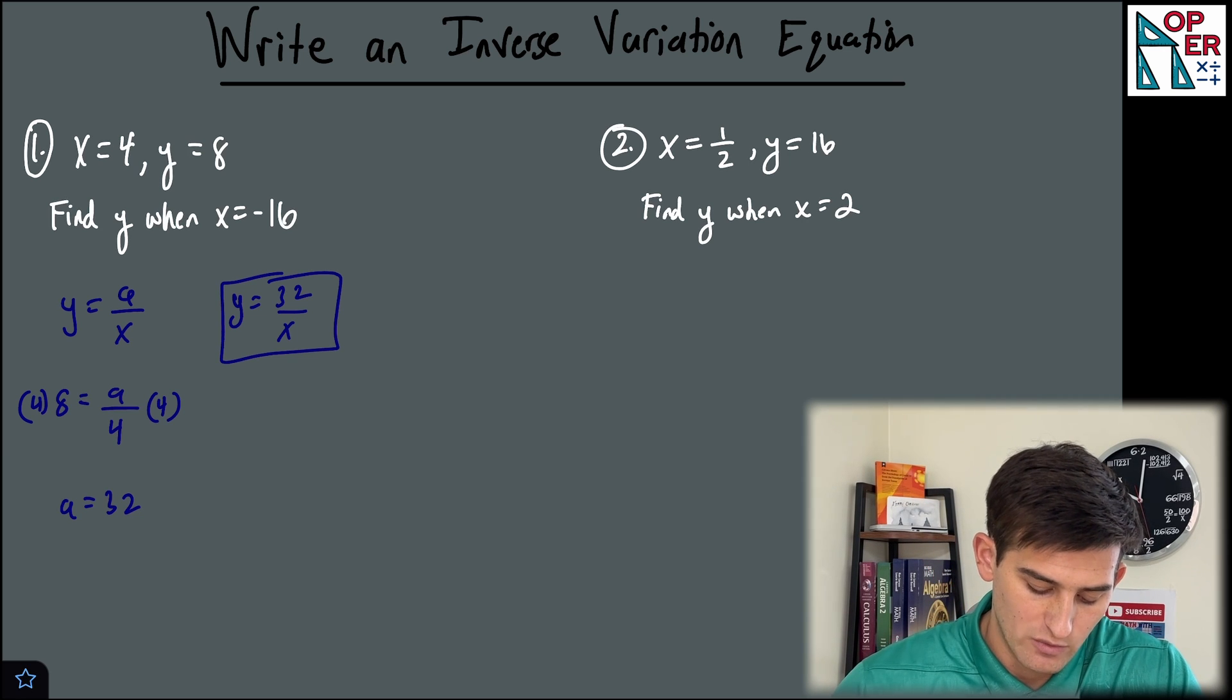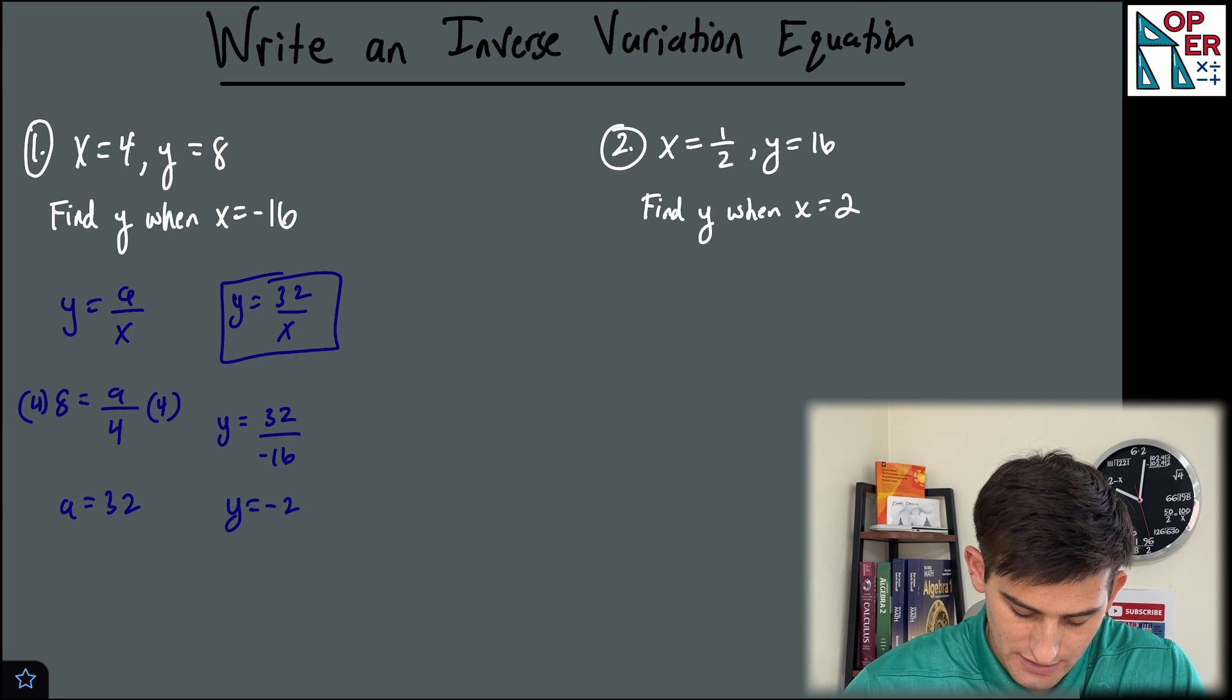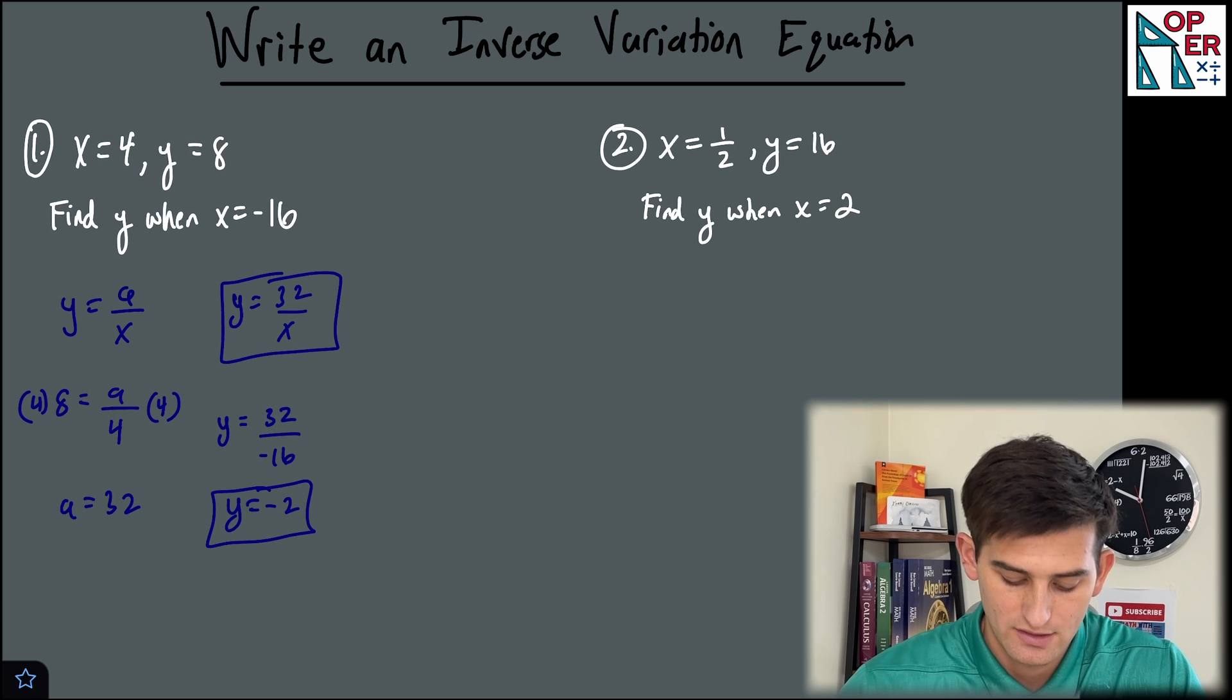And now we wanna figure out what y is when x is negative 16. So y is equal to 32 divided by negative 16. So y is equal to negative two when x is negative 16.